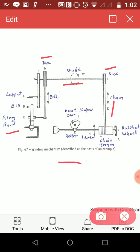The chain drum presses the lever H with the roller O against the heart-shaped cam E.